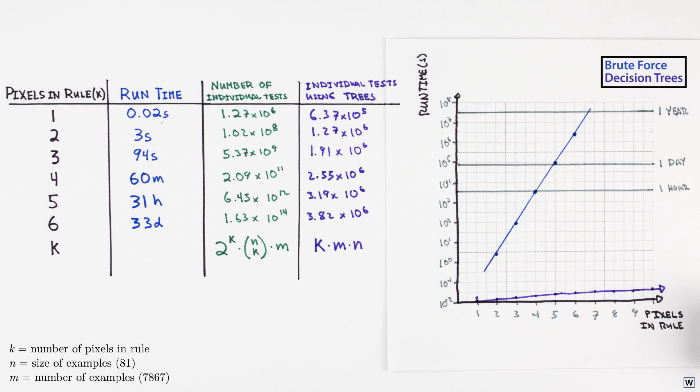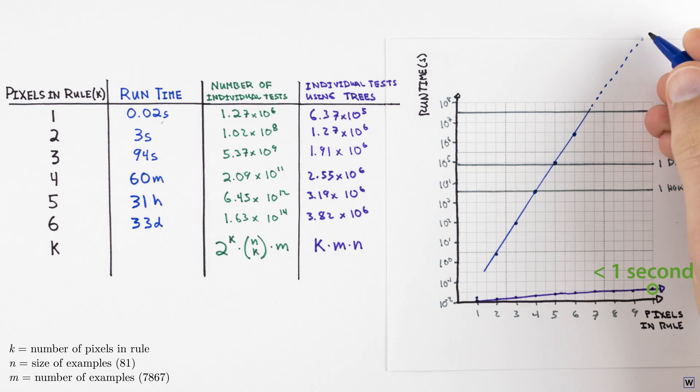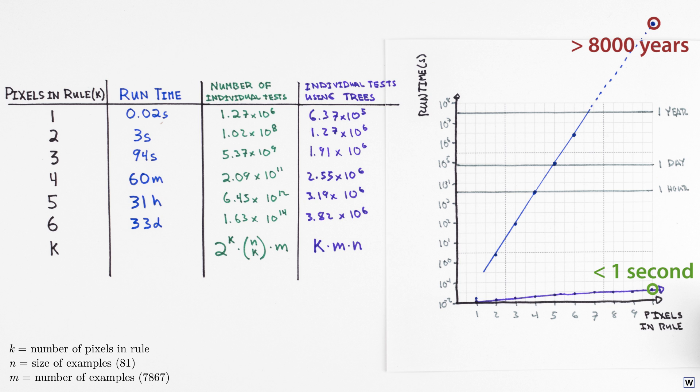Using decision trees, we'll be able to find a 10 pixel rule in less than a second, where our brute force approach would require over 8,000 years, making decision trees literally trillions of times faster than our brute force approach in the 10 pixel case.